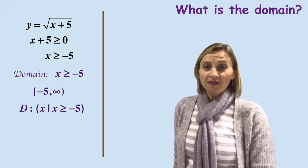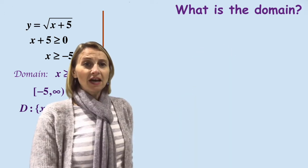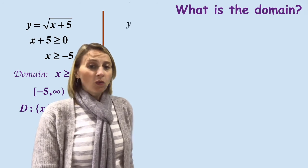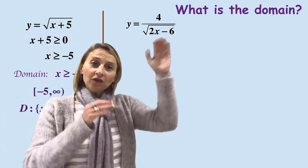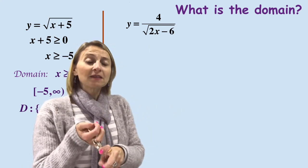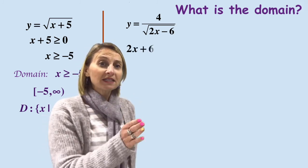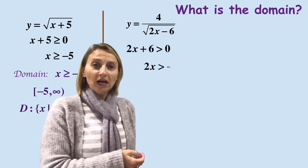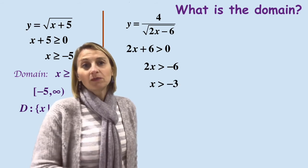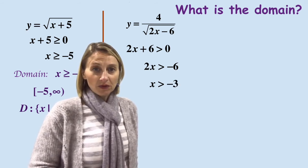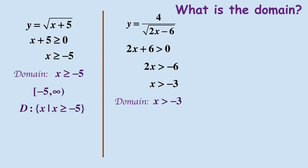And then in set notation: D colon curly bracket, x such that x is greater than or equal to minus 5, and close the brackets. Let's take a look at an example of the last trick: y equals 4 over the square root of 2x minus 6. This combines the first two — it's under a square root and it's on the denominator. That means it has to be positive and it can't equal 0. So it's going to be 2x minus 6 is greater than 0. Solving: 2x is greater than 6, so x is greater than 3. Wait — 2x minus 6 > 0 gives 2x > 6, so x > 3. The domain is x > minus 3. In interval notation: from negative 3 to infinity with round brackets. And in set notation: D colon x such that x is greater than minus 3.